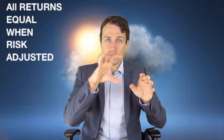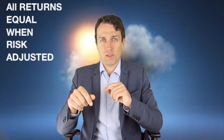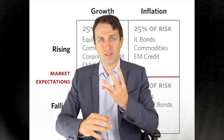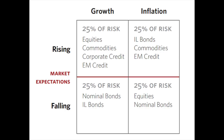Therefore, if you want an all-weather portfolio, you have to expose your portfolio risk to each asset class. When we sum up all that can happen in the economy, we have four scenarios: a growing economy with inflation above expectations, a growing economy with inflation below expectations, a falling economy with rising inflation, or a falling economy with declining inflation. If you own asset classes that do well in each of those four scenarios and allocate the same percentage of risk to each, you have an all-weather portfolio.